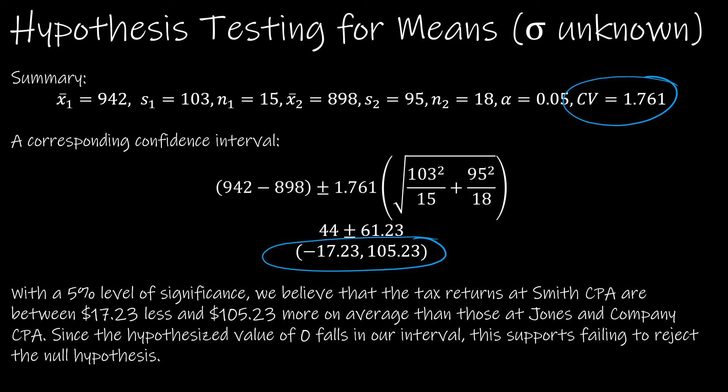When we write our conclusion for our interval, we are sure to include what the interval means first. So with a 5% level of significance, we believe the tax returns at Smith CPA are between $17.23 less and $105.23 more on average than those at Jones and Company CPA. And then we talk about the hypothesized value in this case of zero. Since the hypothesized value of zero falls in our interval, this supports failing to reject the null hypothesis.